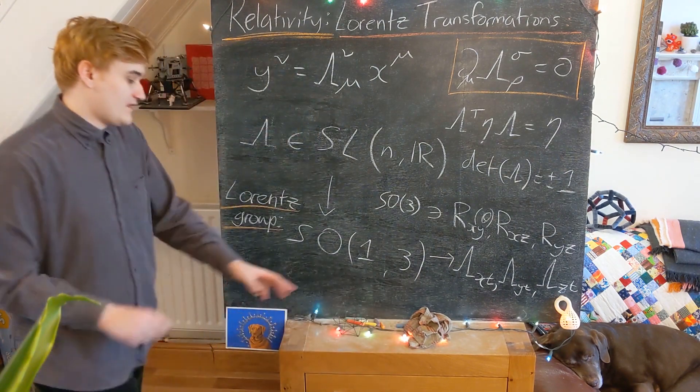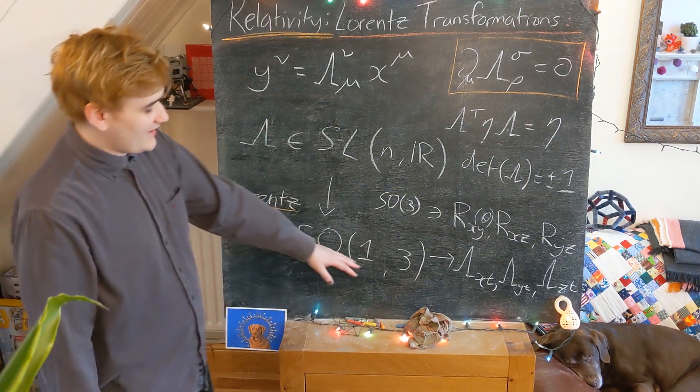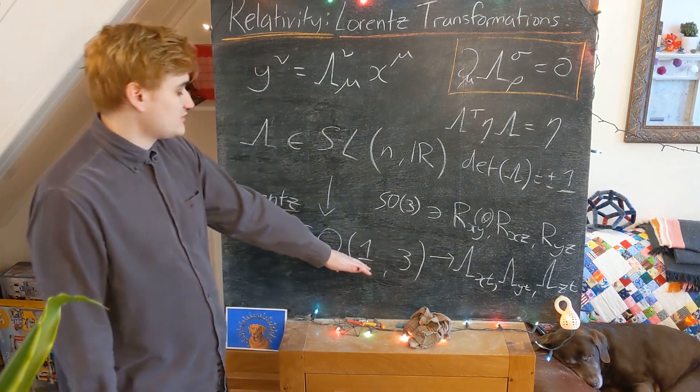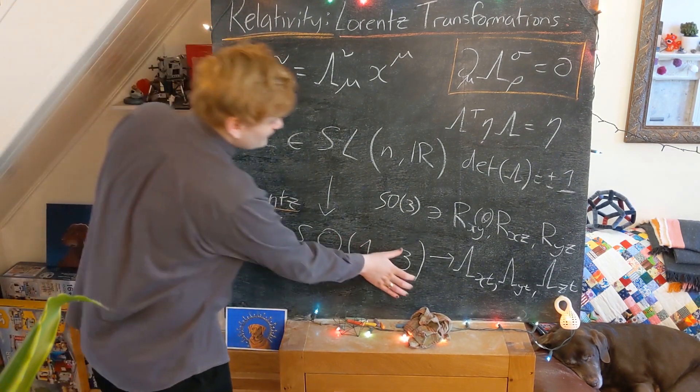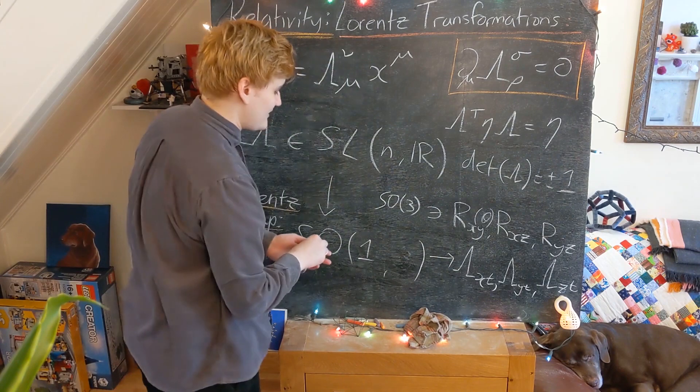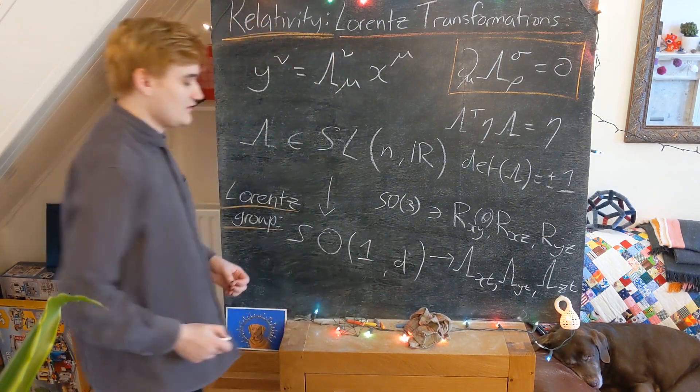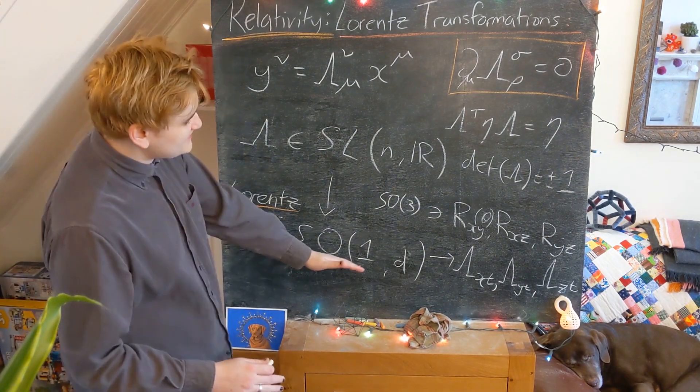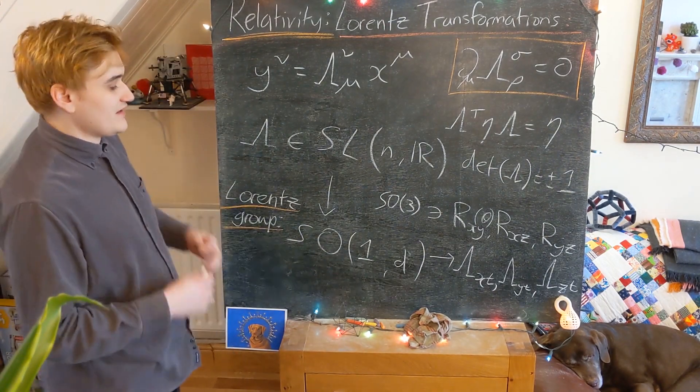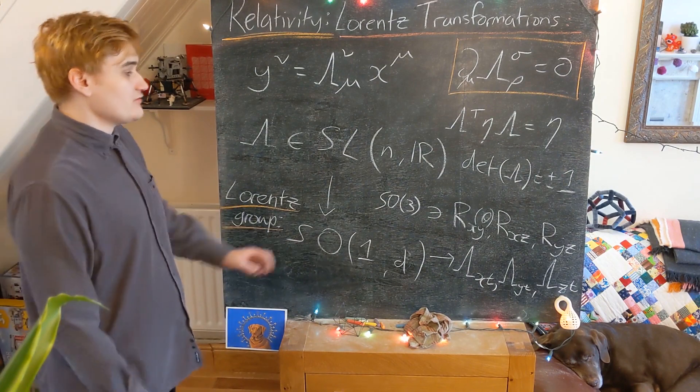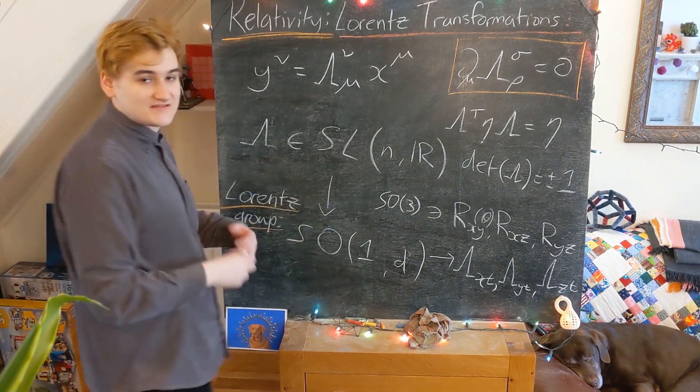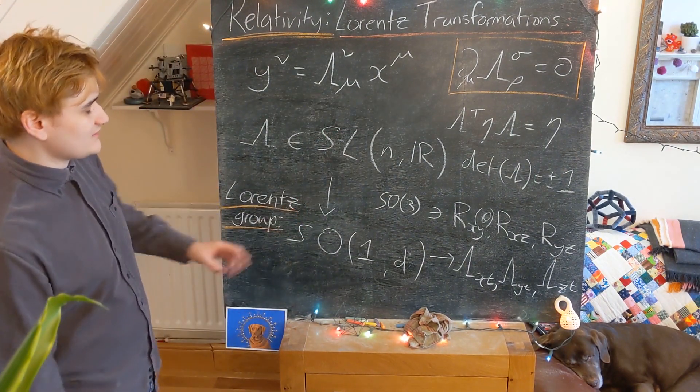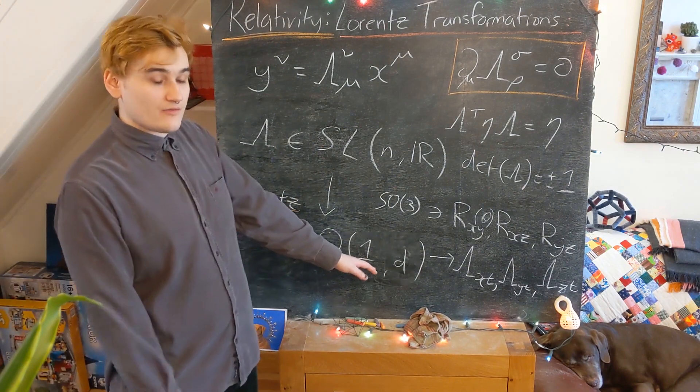The Lorentz group, SO(1,3). In the case of our universe, we have three spatial and one time dimension. The Lorentz group, in arbitrary dimensions, you can just replace with a D there. And the really important thing to realize about the Lorentz group is that it is an orthogonal group. So it's going to have to satisfy some kind of orthogonality condition. But it's a pseudo-orthogonal group.